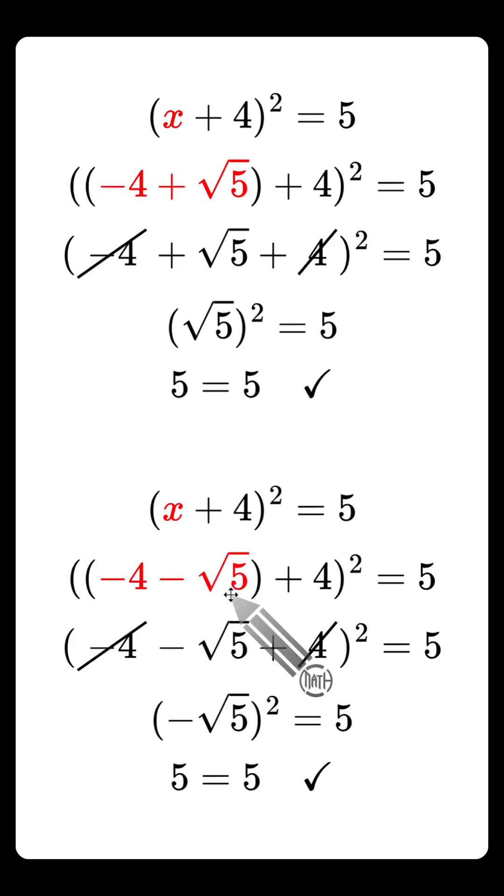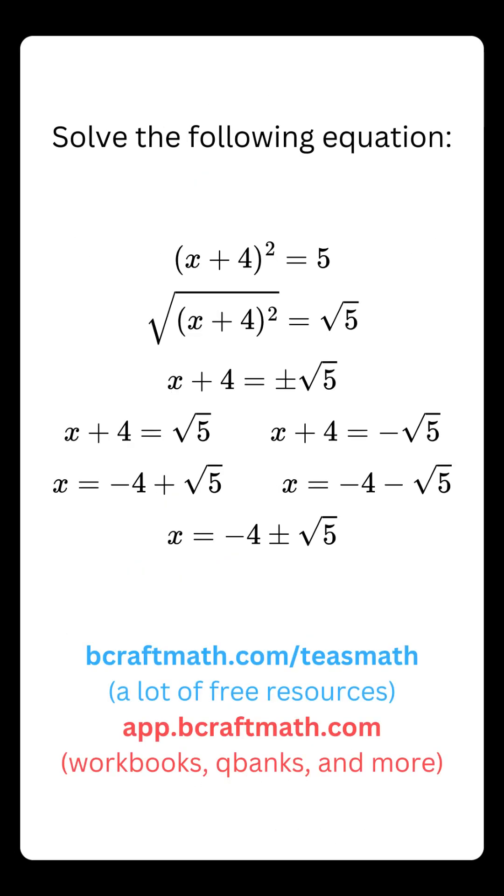Very similar. Negative four minus the square root of five. The same thing happens. And it is worth mentioning negative square root of five, you square all that, you get five over here. That is why we have two solutions to this equation.